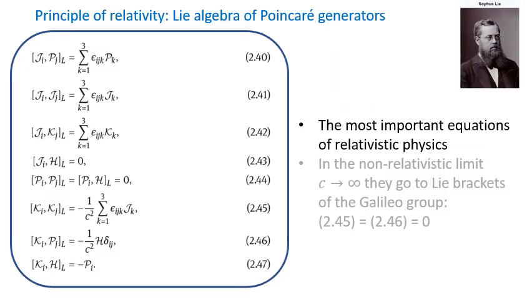My example was for a one-dimensional group. The Poincaré group is ten-dimensional, so it has ten generators which may not commute with each other — they constitute the so-called Lie algebra of the Poincaré group. The commutators, or Lie brackets, of the generators are shown here. Later we will have multiple occasions to appreciate that these are the most important equations of relativistic physics — all relativistic effects are encoded in these formulas. In the non-relativistic limit, these commutators reduce to the Lie brackets of the Galileo group.